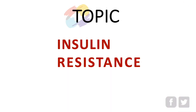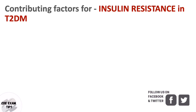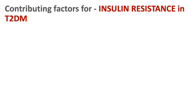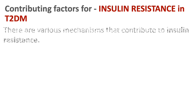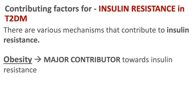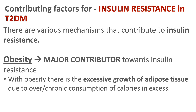Part 2: insulin resistance. Let's look at the contributing factors for insulin resistance. There are various mechanisms involved — it can include genetics, it can include metabolic syndrome, but one of the major contributors is obesity. With obesity, there is excessive growth of adipose tissue or fat tissue due to overconsumption or excessive intake of calories.